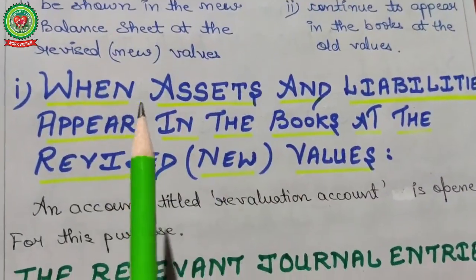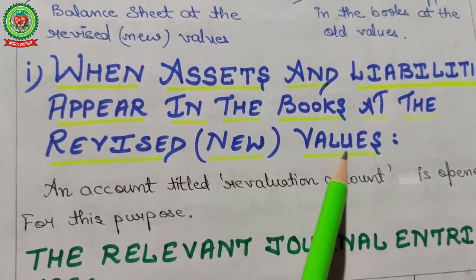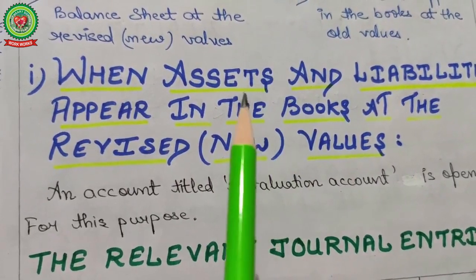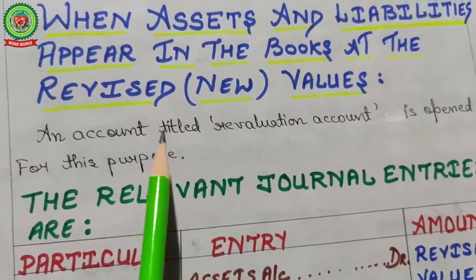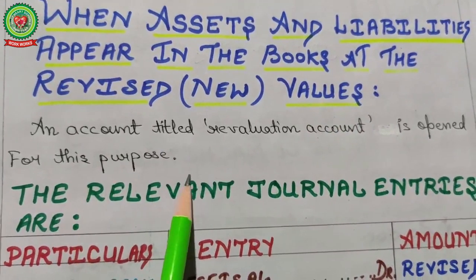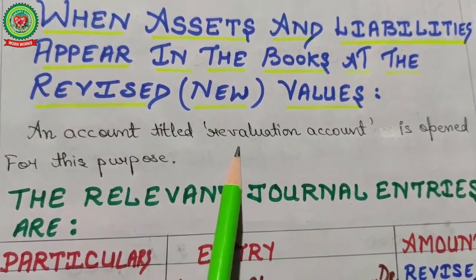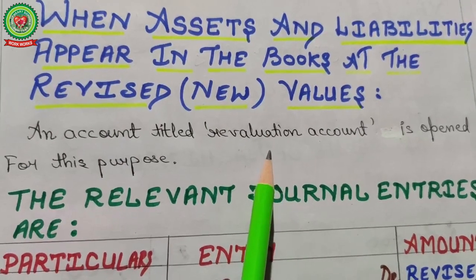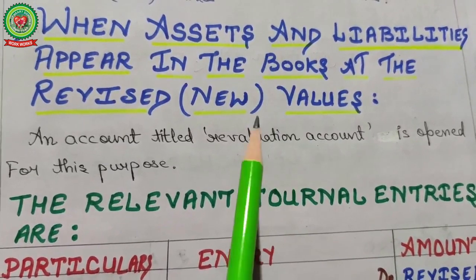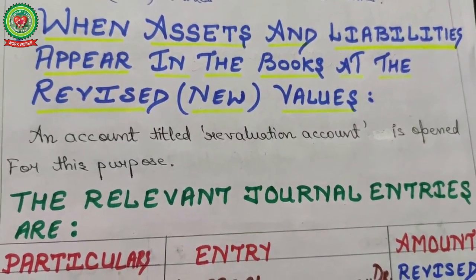The two methods are: first, assets and liabilities are shown in the new balance sheet at revised values; second, assets and liabilities continue to appear in the books at old values. For the first method, a revaluation account is opened for this purpose. The revaluation account only deals with gains or losses, and its nature is nominal.